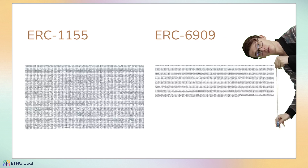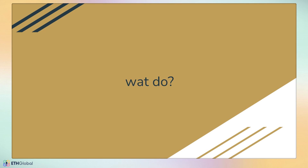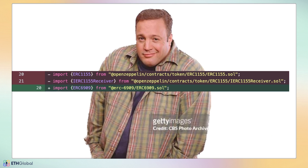The other big factor is code size. This actually came up with Uniswap because their singleton contract is getting pretty close to the code size limit. Looking at a side-by-side comparison from the Solmate repo — just the mock ERC-1155 and ERC-6909 contracts — the code size difference is pretty drastic for something that's more or less functionally identical.